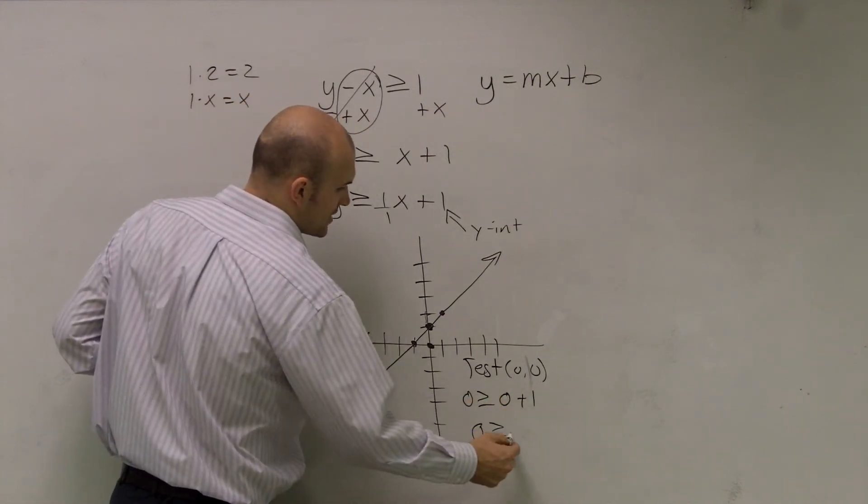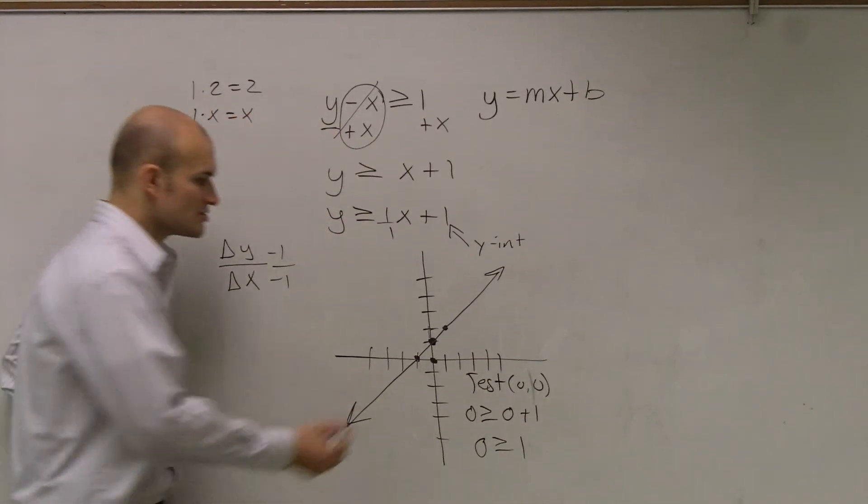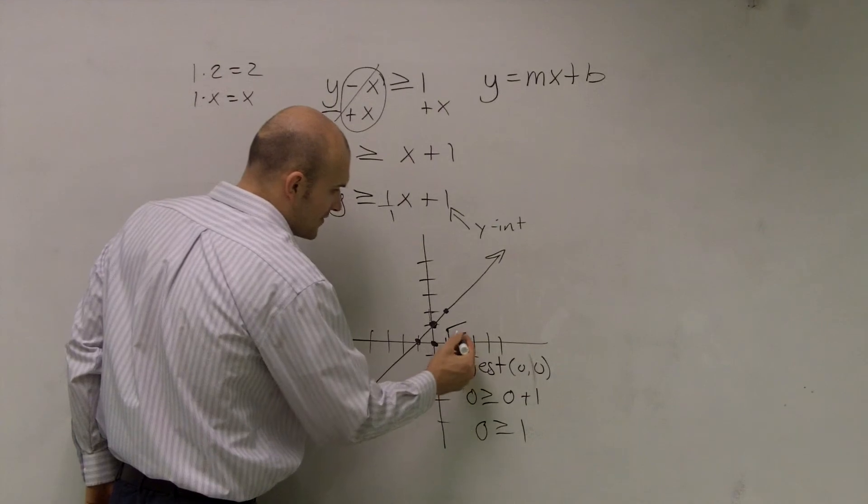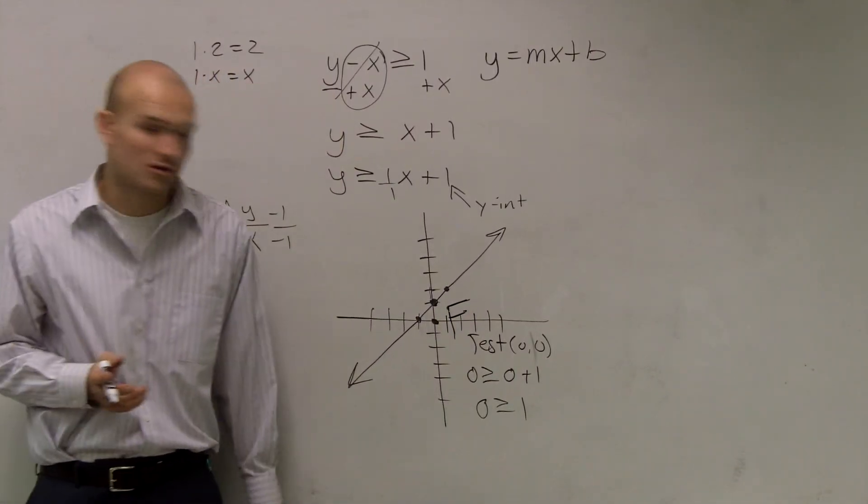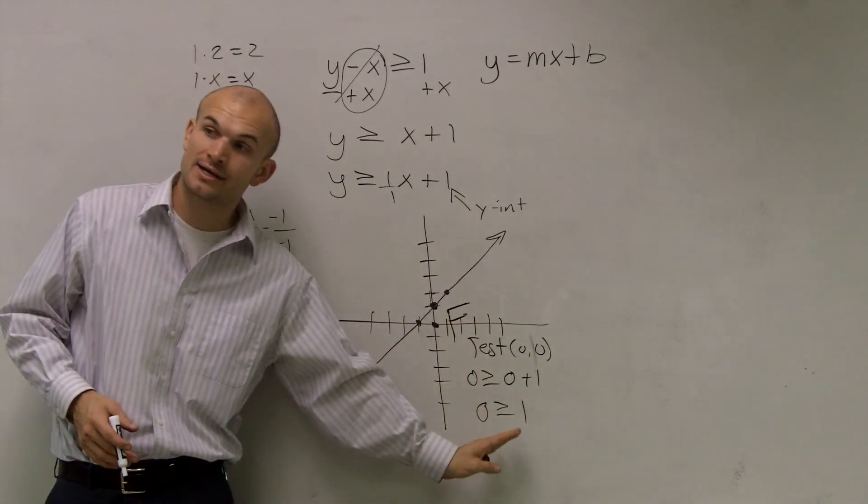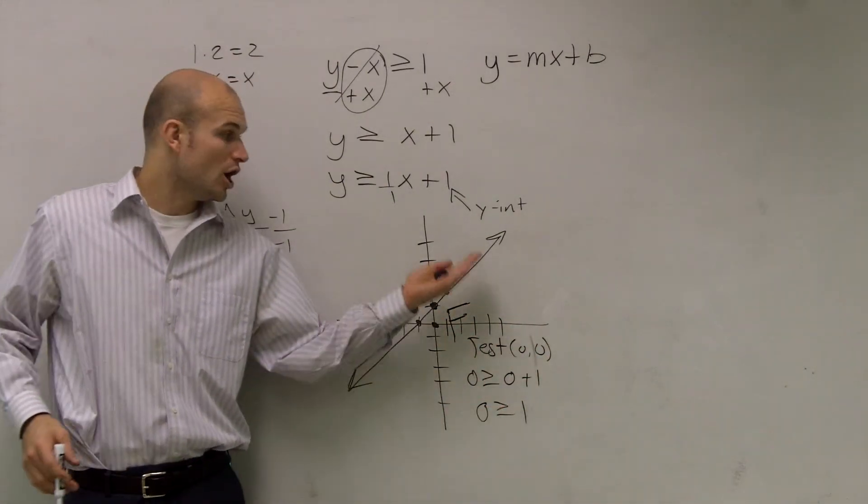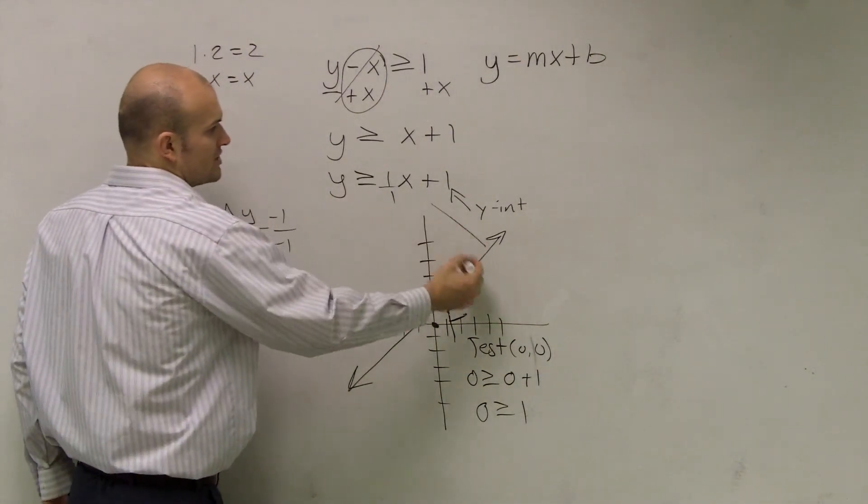So I plug in 0 into my function for y and x. I get 0 is greater or equal to 1. So is that true or false? False. So I'm going to put a nice big F there. The reason why I want to put a nice big F there, so it reminds me that all points on this graph that are below the line are false. Therefore, all the points that are above the line are true.